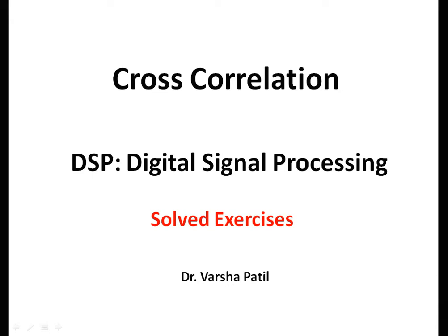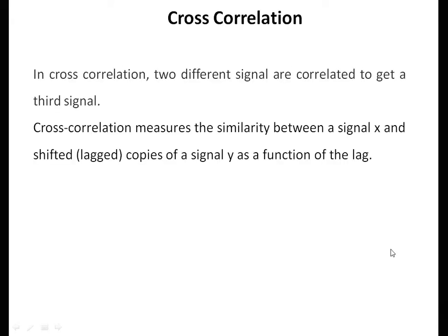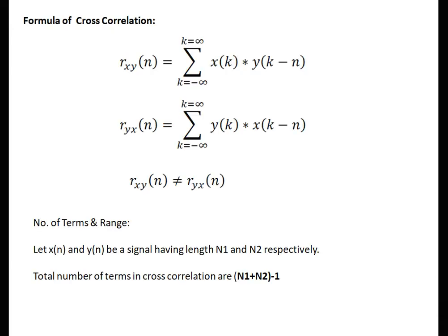Dear listener, welcome to my channel. Topic is cross-correlation. In cross-correlation, two different signals are correlated to get a third signal. Cross-correlation measures the similarity between signal x and the lagged or shifted version of the signal y. The formula of cross-correlation is R_xy(n) = summation k from minus infinity to infinity of x(k) into y(k minus n).